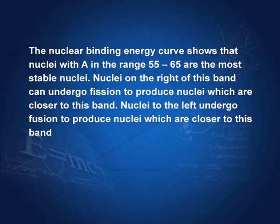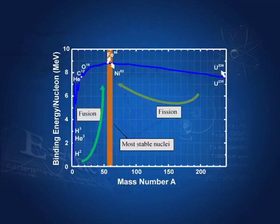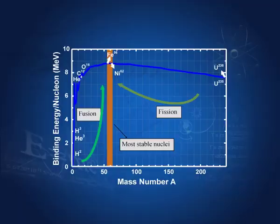Now we plot the binding energy per nucleon against the mass number. In this graph, mass number goes from 0 to about 250. The binding energy per nucleon is maximum in the band with mass number 55 to about 65. This means this is the region of the most stable nuclei. Nuclei on either side of this band, where the binding energy per nucleon is decreasing, are less stable than nuclei in this band.